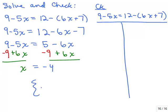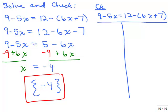It looks like negative 4 is going to be the solution if I didn't make any mistakes. On a test you can't redo the problem or ask someone else, so we're going to plug in negative 4 for x.